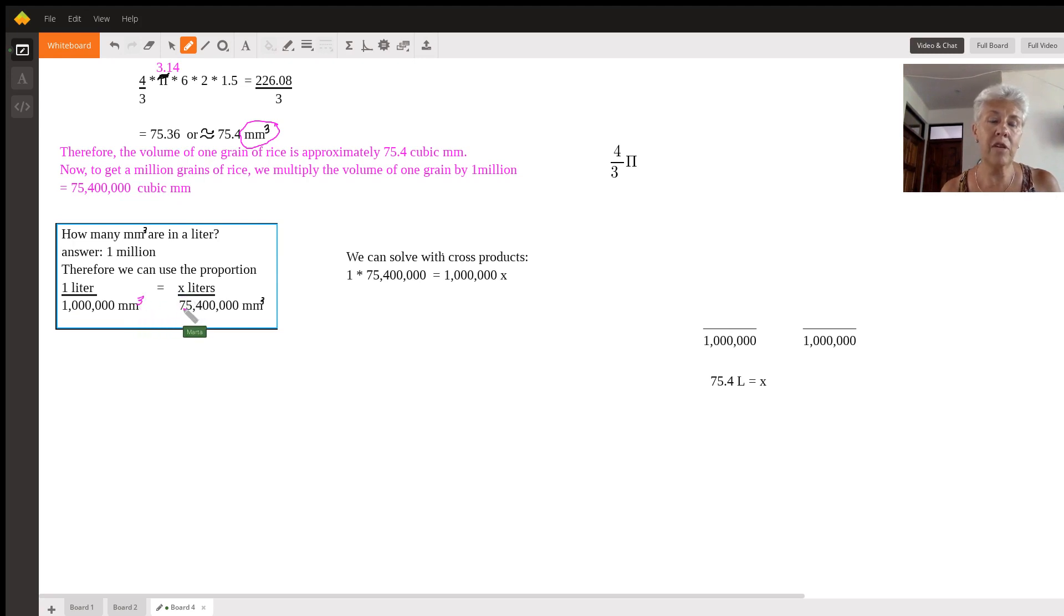Okay and x liters therefore is going to be expressed by that over 75 million four hundred thousand cubic millimeters. So you solve this of course with cross products you multiply that you multiply that so here's the one the second and then to solve it. We just divide both sides by a million to get x by itself on one side of the equation and when we do that we're going to end up with 75.4 liters.